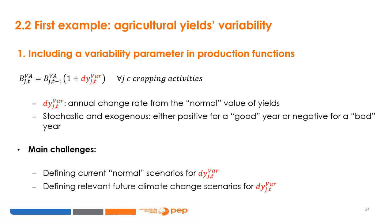To assess the impact of a greater variability in the climate, we chose to focus on agricultural yields again. As already done in the previous section for mean changes in yields, it is possible to consider that predicted shocks on yields feed the PEP1T model through exogenous shocks on the technical shift parameter in agricultural production functions. However, compared with the previous deterministic approach, the red term is now a stochastic parameter. It can be defined as the exogenous annual change rate from a normal value of the total factor productivity produced by climate variability — a time-dependent variable, either positive for a good year or negative for a bad year.